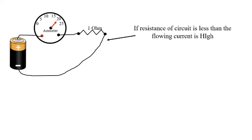Current is basically flow of electrons. Resistance opposes the flow of electrons. So if there is low resistance then there will be high flow of electrons, so flow of current will be high.